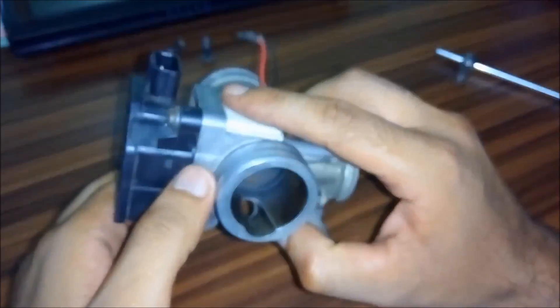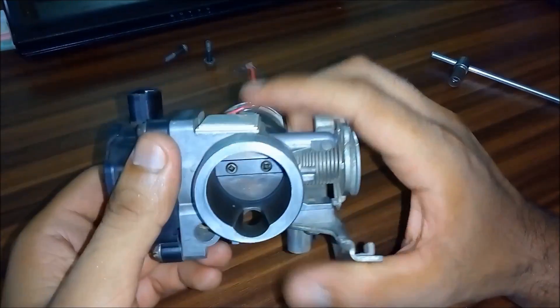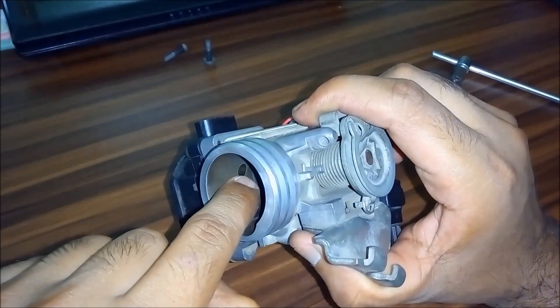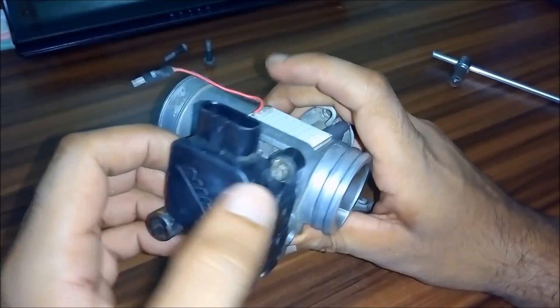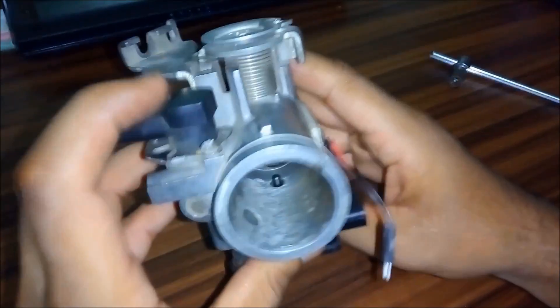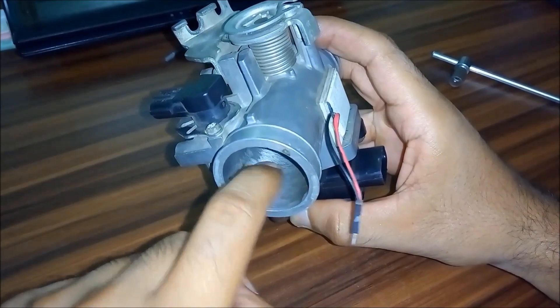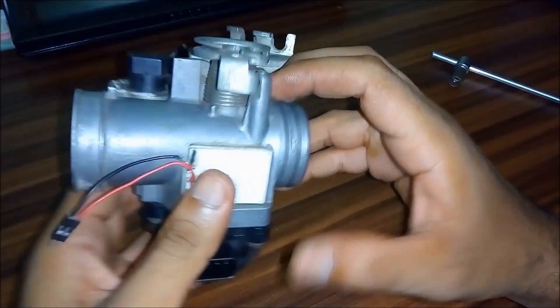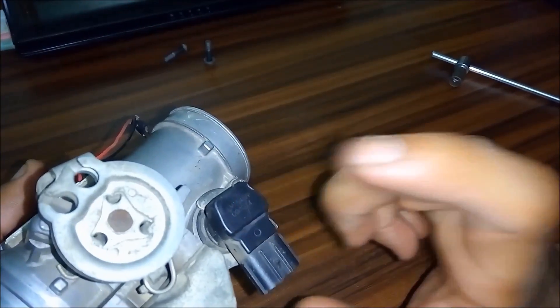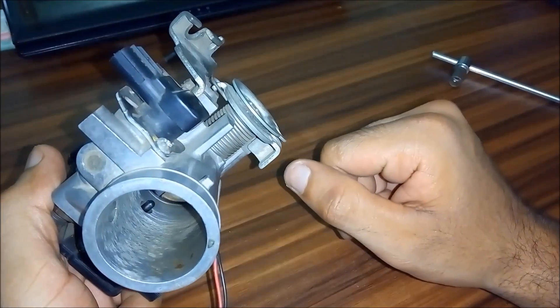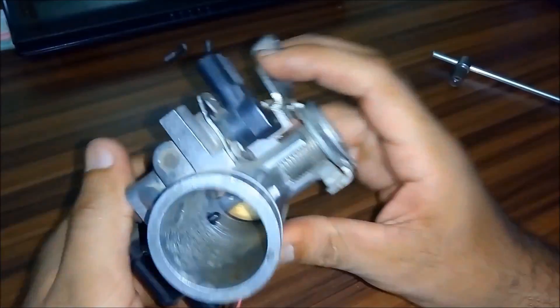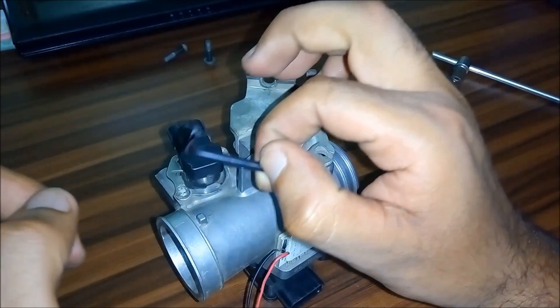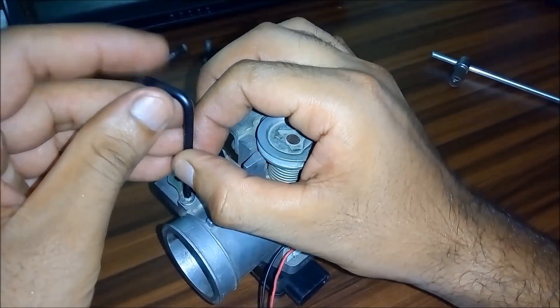The purpose of this idle air control valve is when your throttle plate is fully closed, the air enters from this side and it goes into this sensor and comes out on the other side from this hole right here. This valve controls the amount of air entering into the engine when your engine is idling. Let's open this. You need a star L key to open this up.